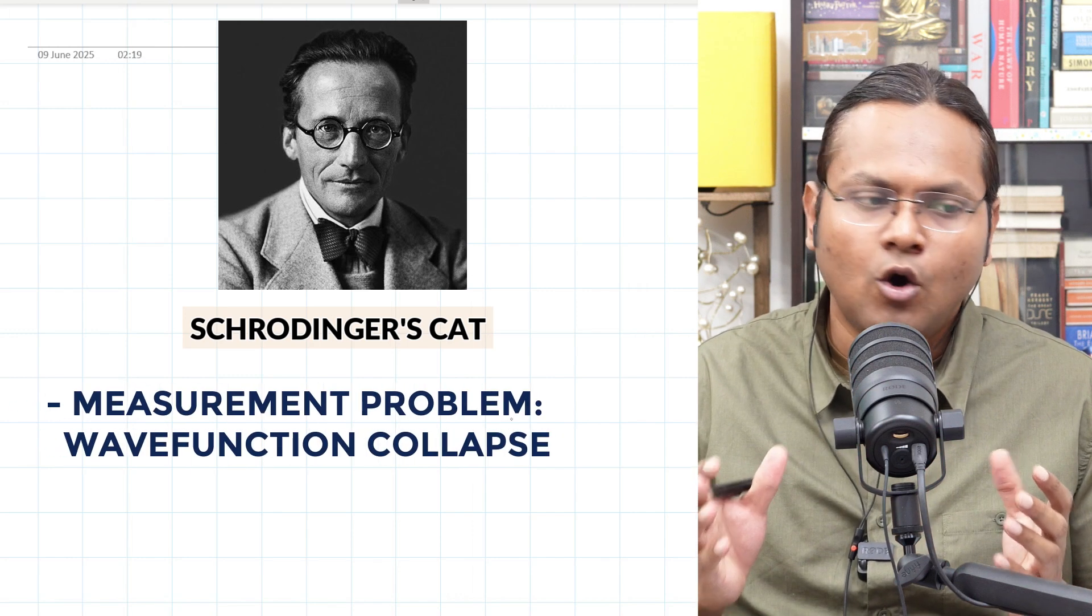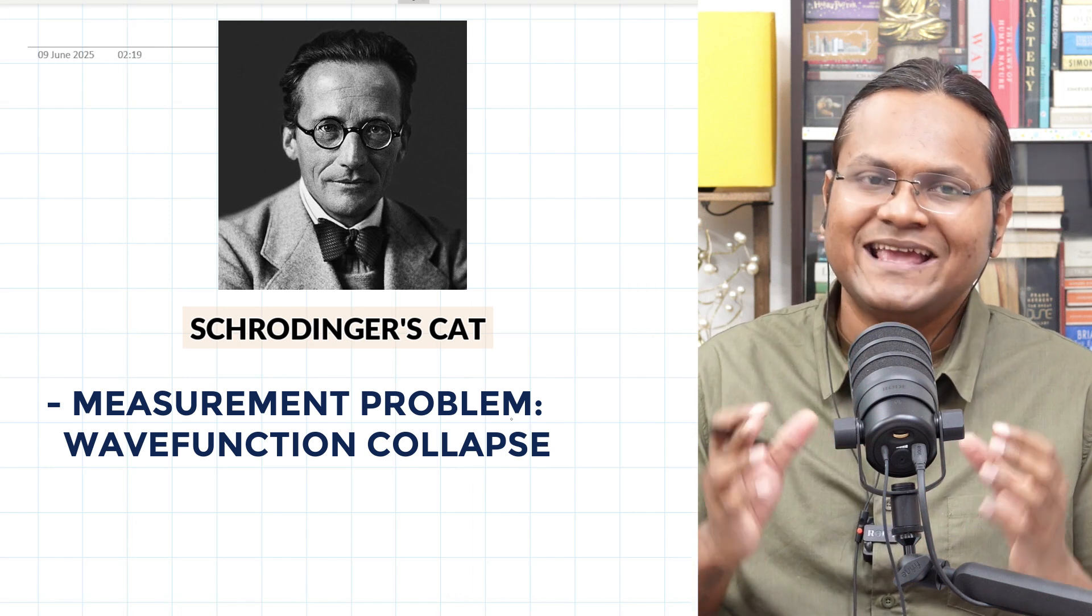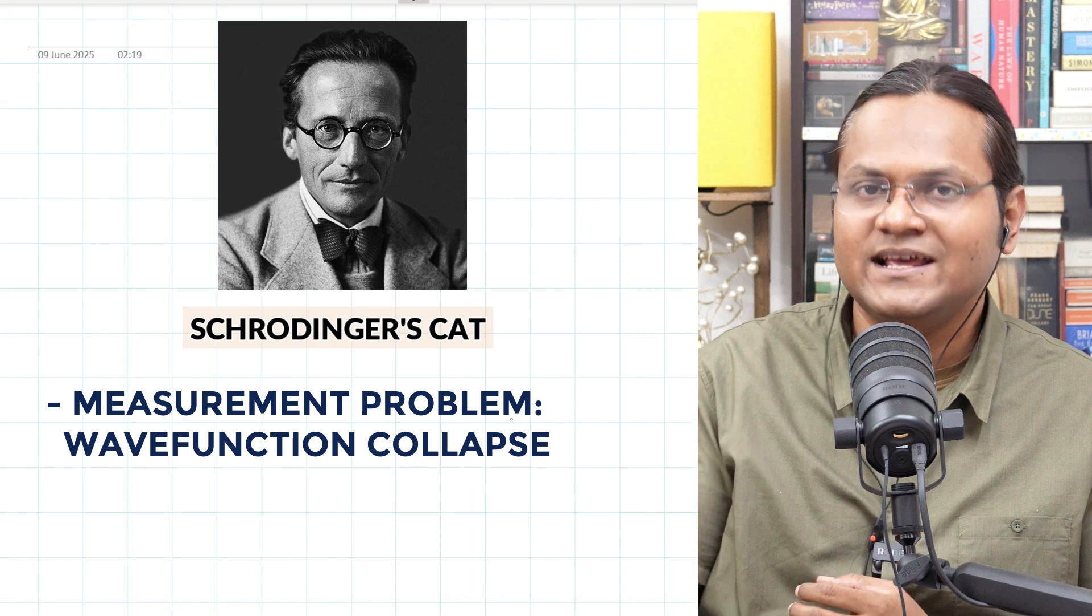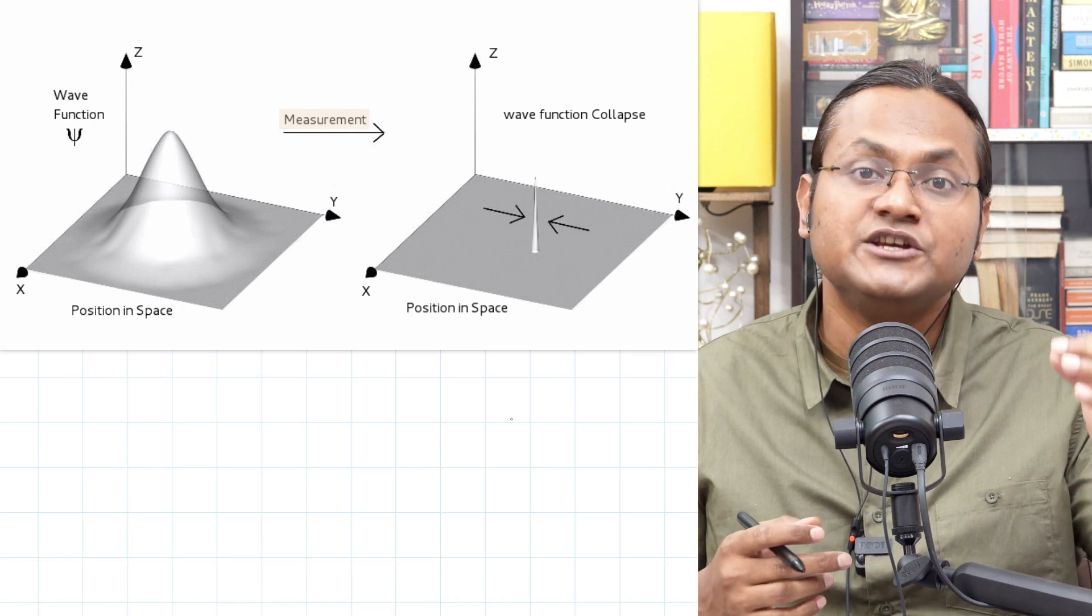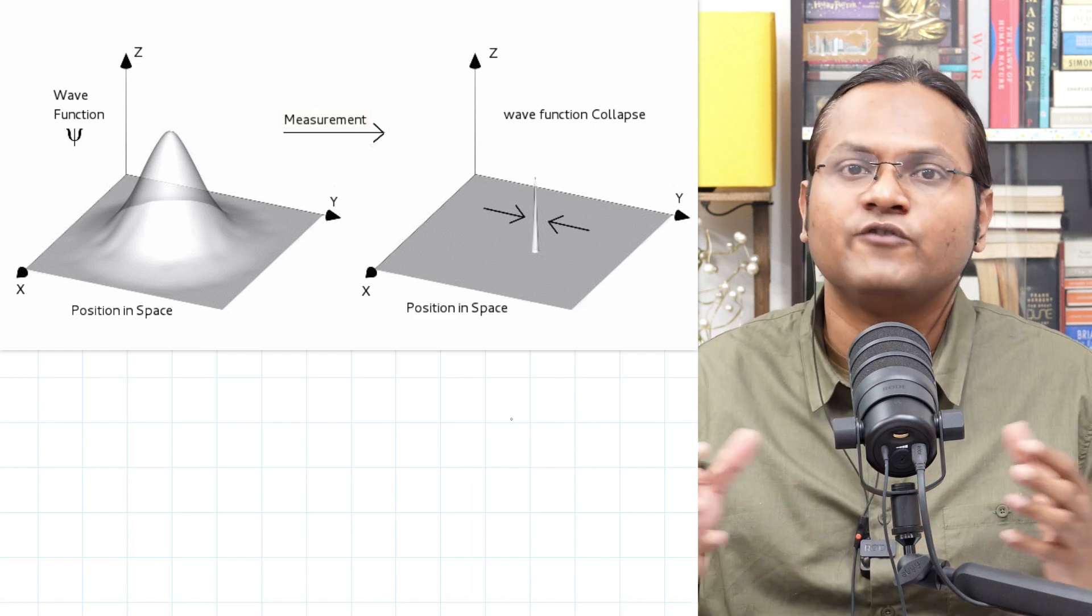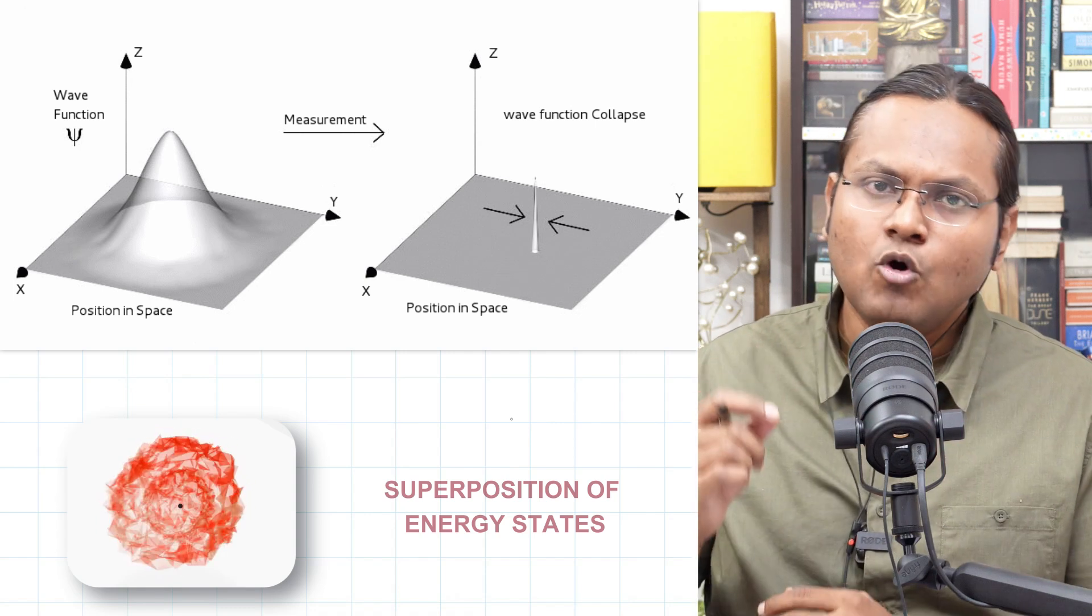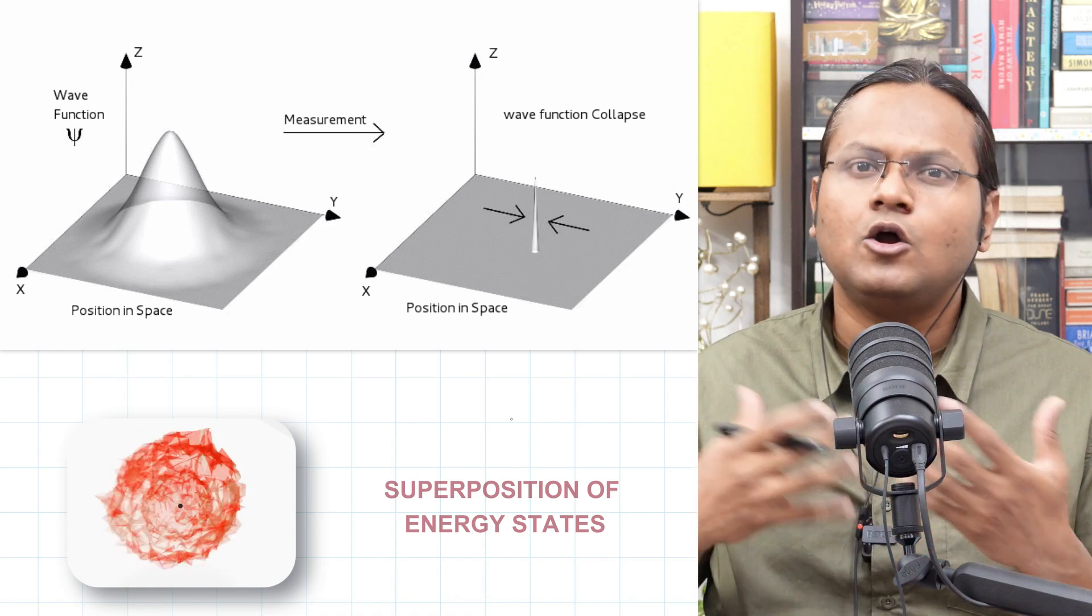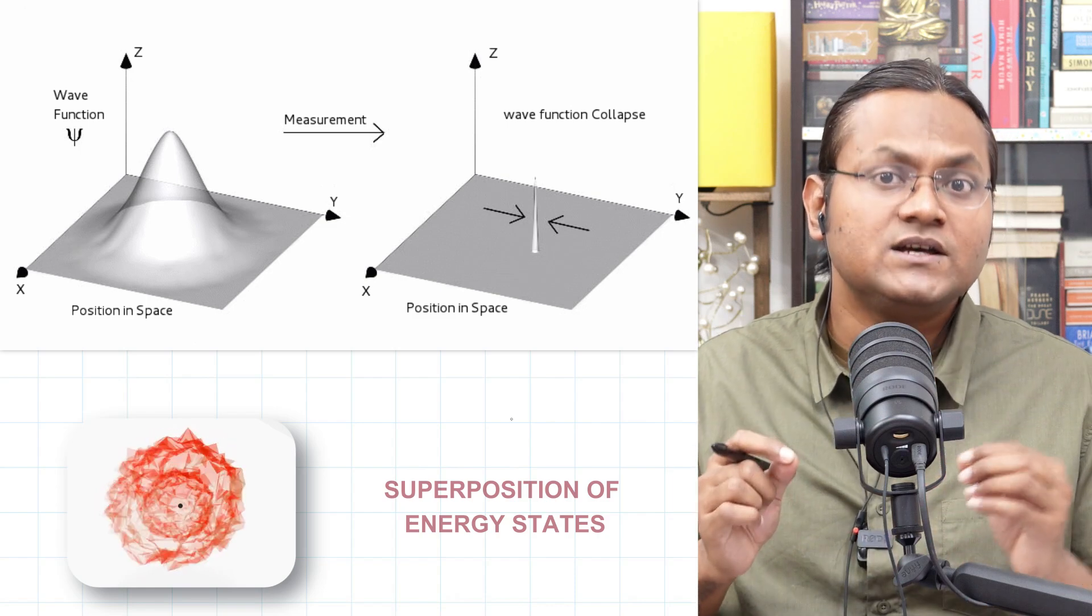So what is the issue that was raised by Schrödinger in this particular experiment? You see, in quantum mechanics, we have something called the measurement problem or the wave function collapse in the Copenhagen interpretation of quantum mechanics, which means that quantum particles can exist in a superposition of different states. For example, a particle can exist at multiple locations at the same time until an observation is made. And when the observation is made, the particle chooses a definite position.